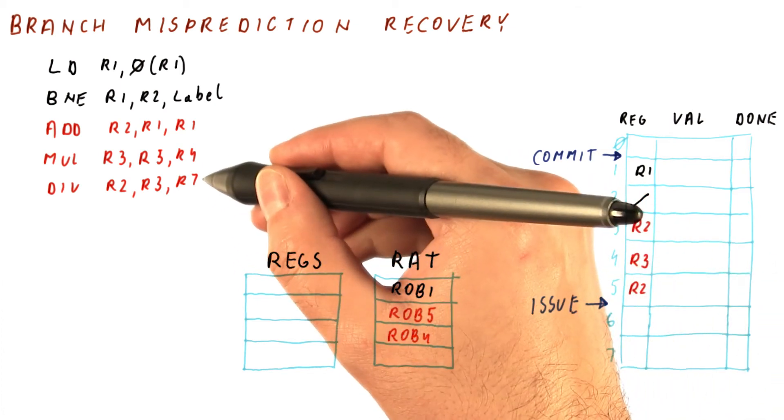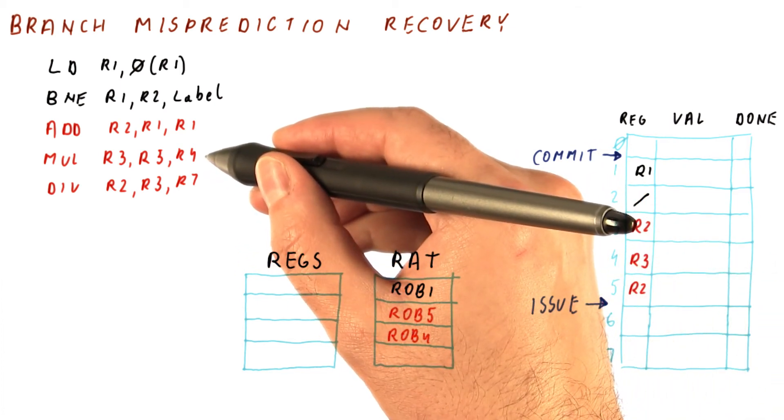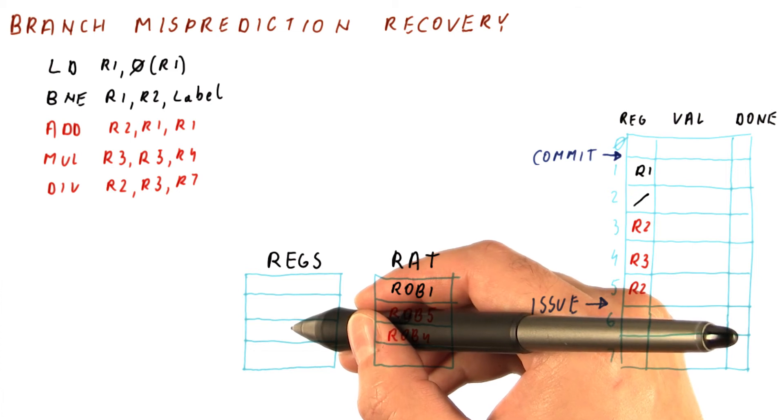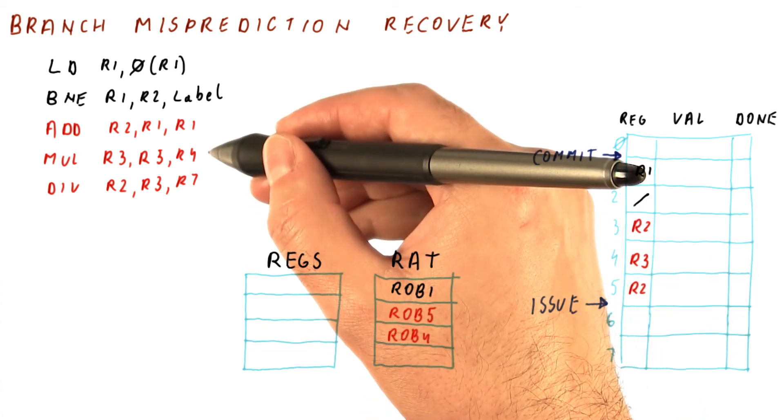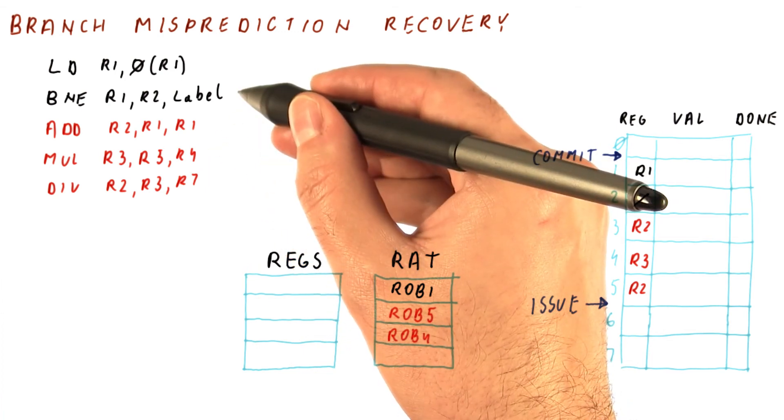So the value of 15, when the multiply finishes, would have been written to the registers. And then we don't know how to undo the multiplication once we discover that the branch has been mispredicted.